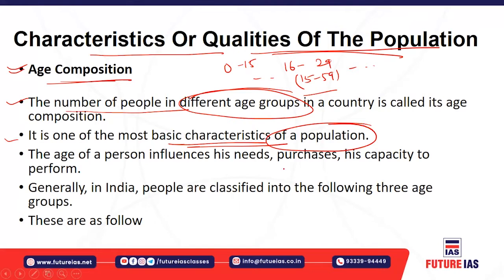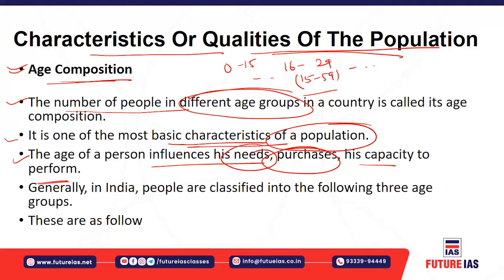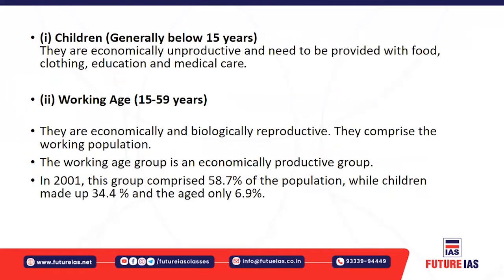The age of a person influences their needs, purchases, and capacity to perform work. A young person in the working age group — say 20 to 29 years — is employable, can earn money, has different purchasing power, and is skilled and enthusiastic. Based on these characteristics, people are classified into three age categories.